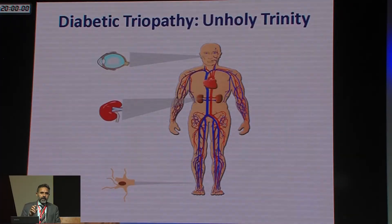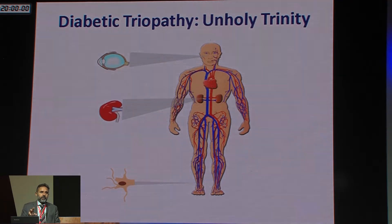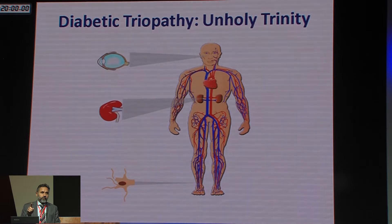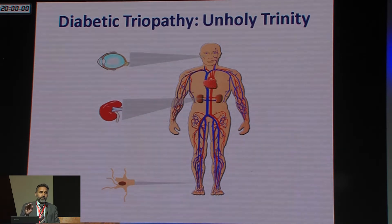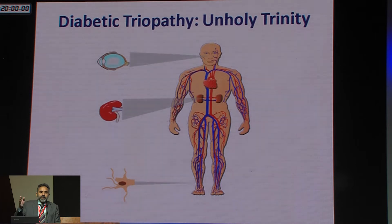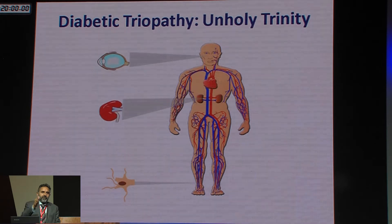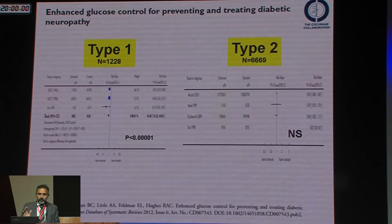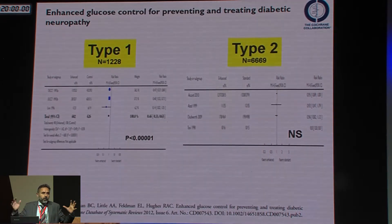Starting with neuropathy — what is the evidence that lowering glucose in diabetic patients improves diabetic neuropathy? Actually, the best evidence we have is that lowering glucose would prevent the worsening of neuropathy, not reverse it. An important message: if glucose lowering only prevents worsening, you should try to diagnose neuropathy as early as possible. The best evidence comes from a Cochrane review, pooling all clinical trial data on the effect of lowering glucose in diabetic neuropathy.